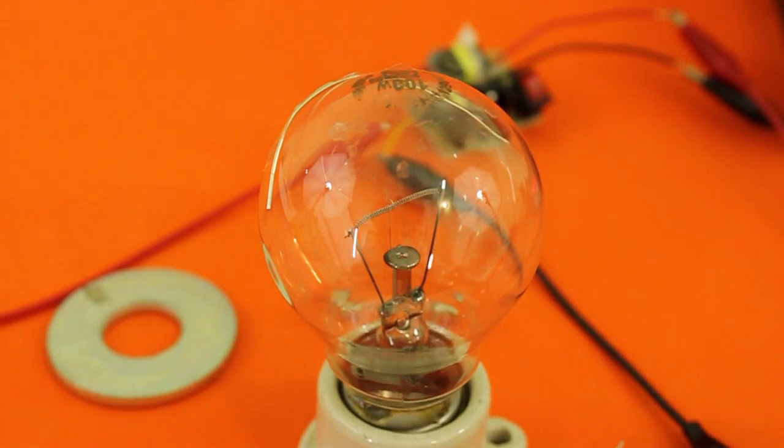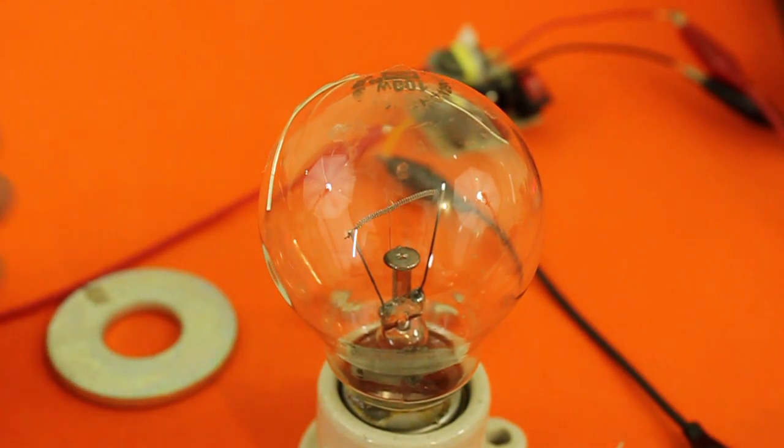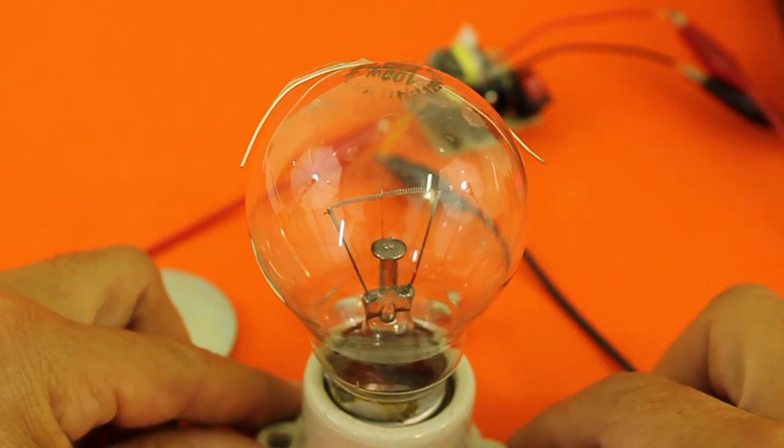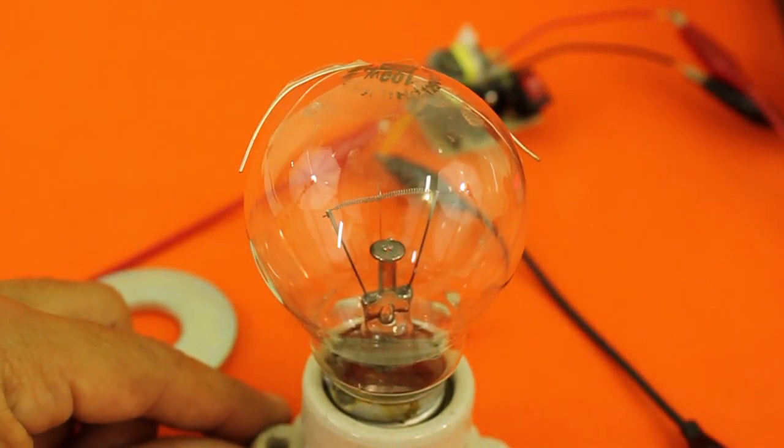The plasma lamp was invented by Nikola Tesla. As you know, he was very interested in high voltage phenomena and he found this behavior when he was experimenting with high frequency currents in evacuated tubes.